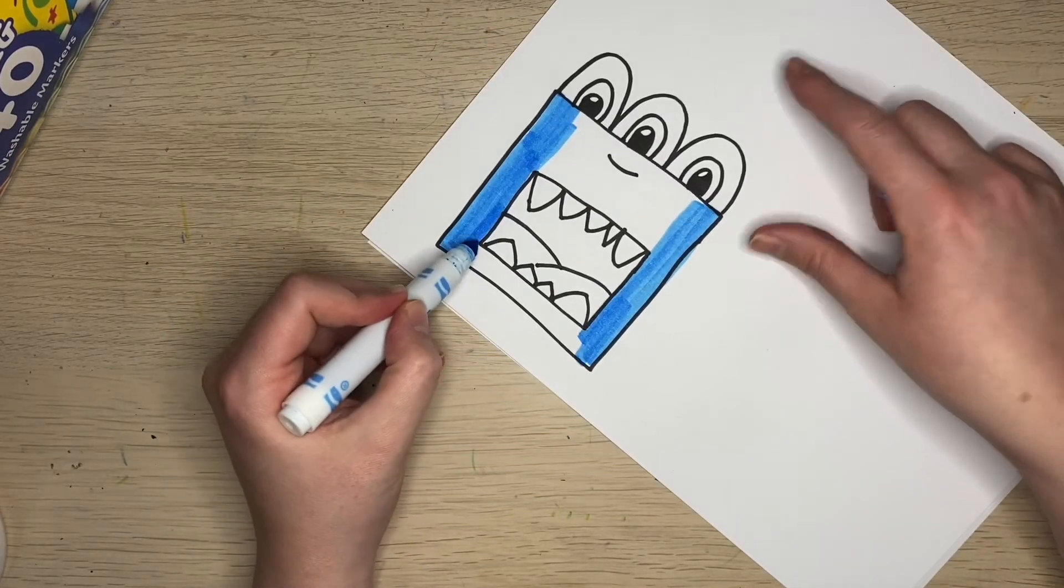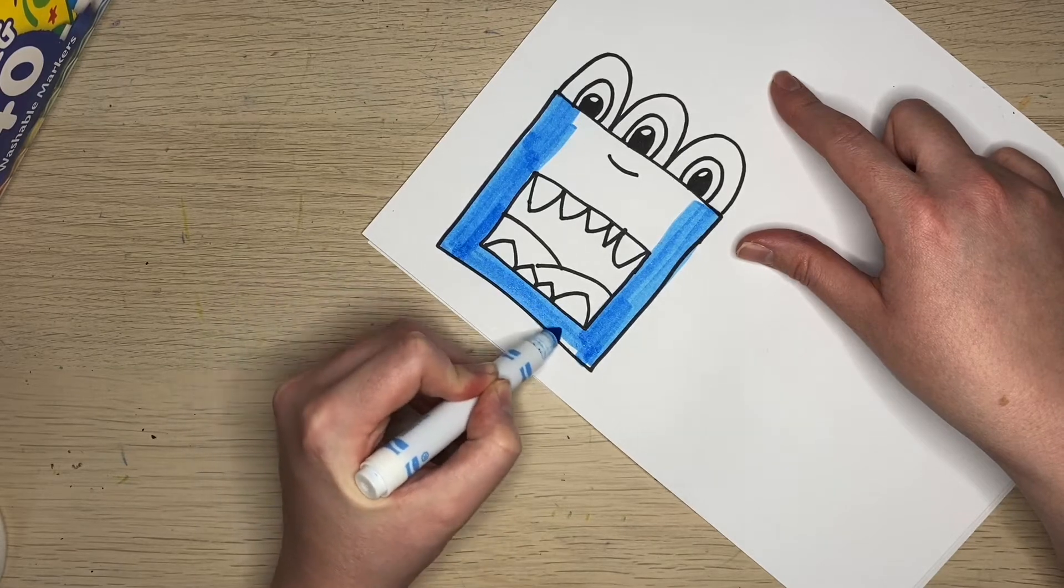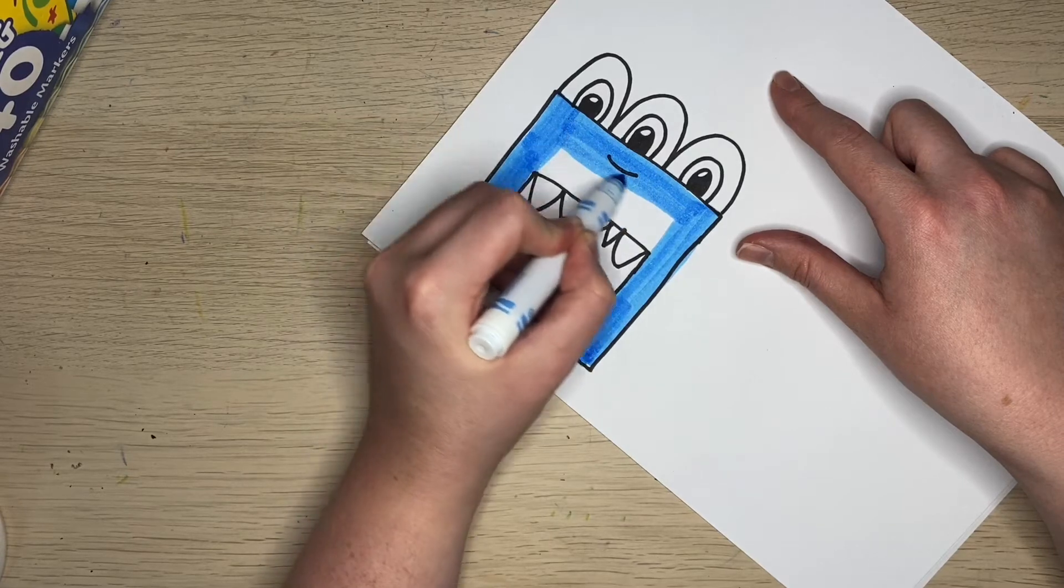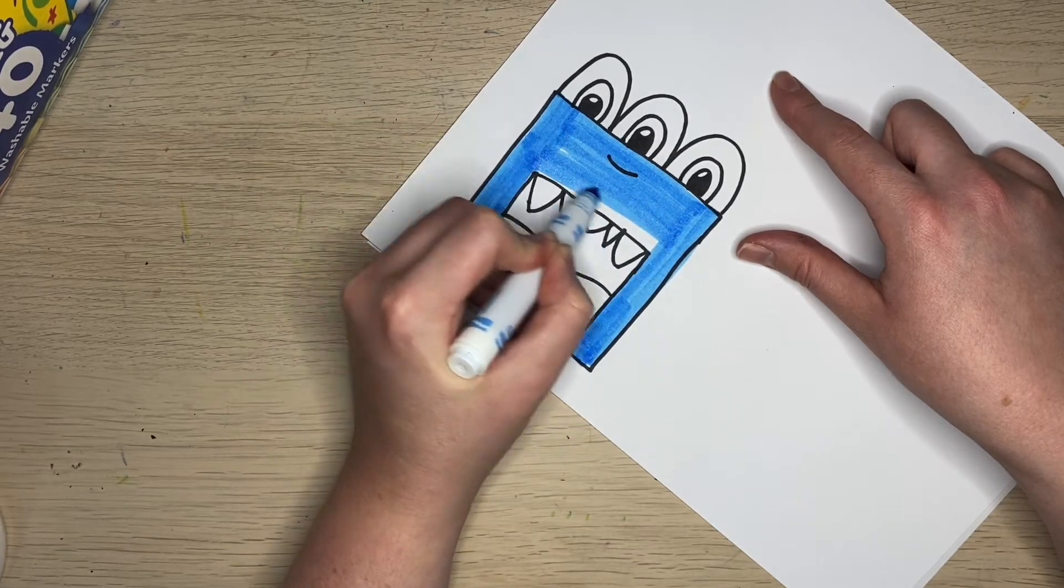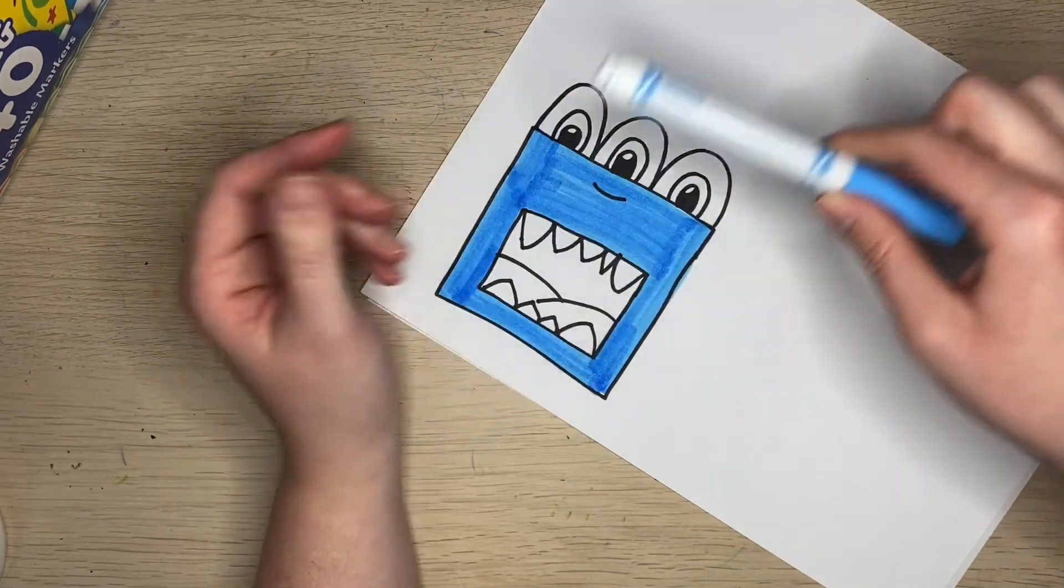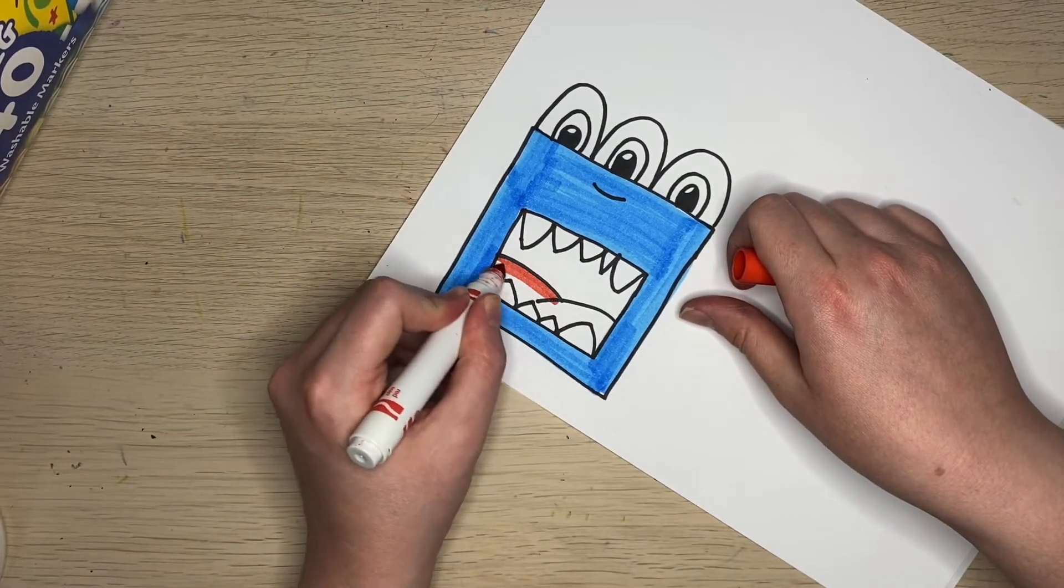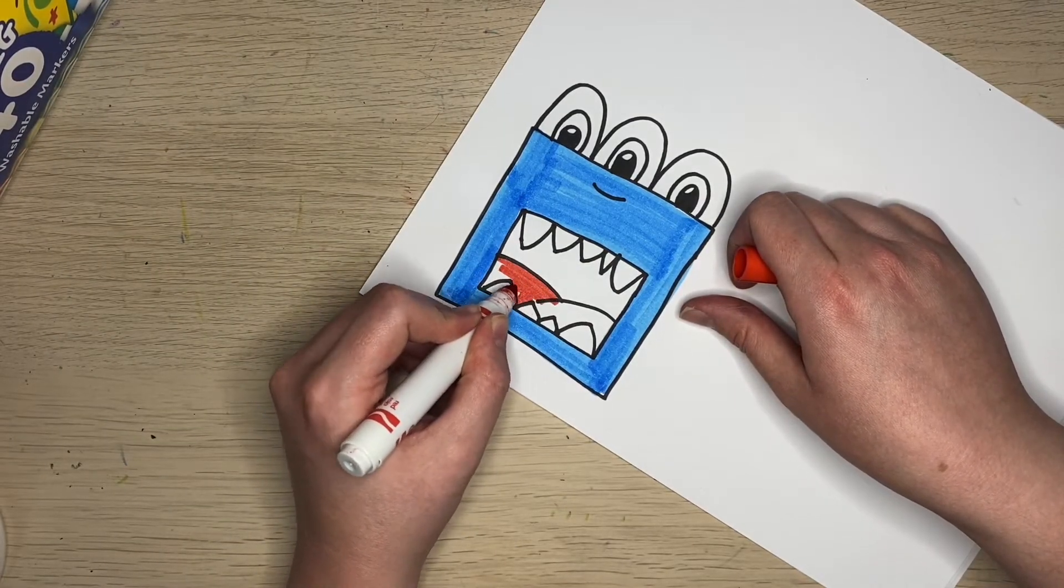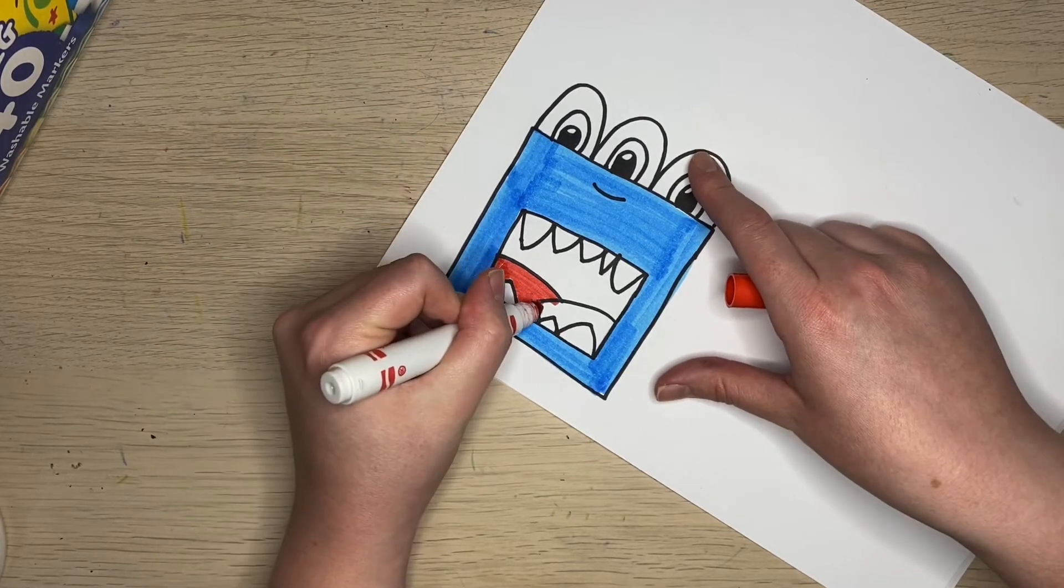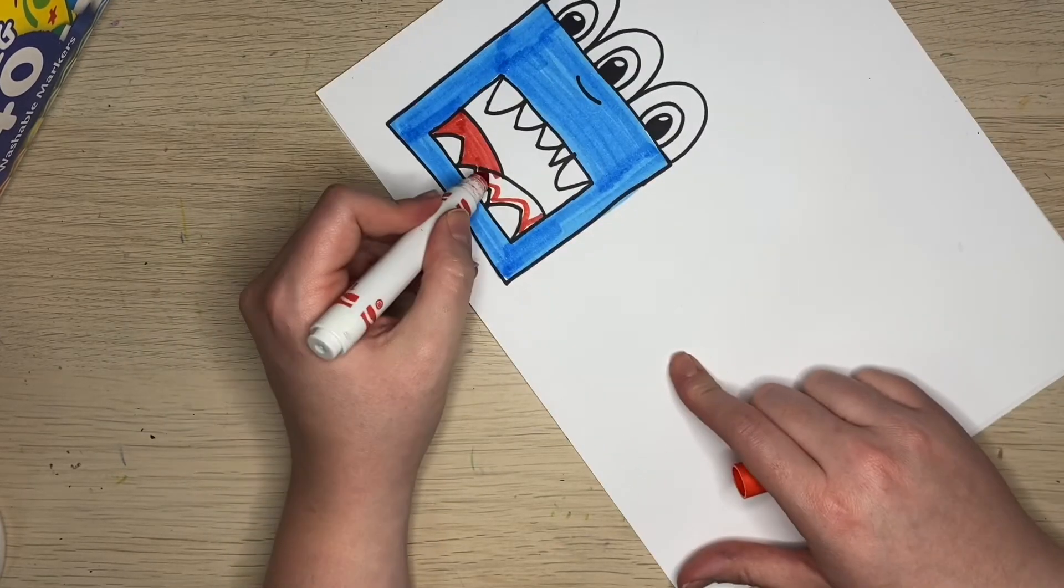If you are able to have construction paper instead of coloring, you will cut and glue your designs together. Right now I'm going to just show you how to color. If you want your Loudmouth to have polka dots, you can do polka dots or different patterns. Instead of his tongue being red, maybe you want to make it pink or purple.